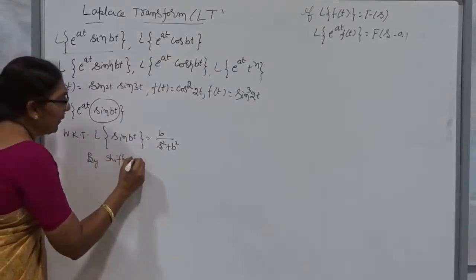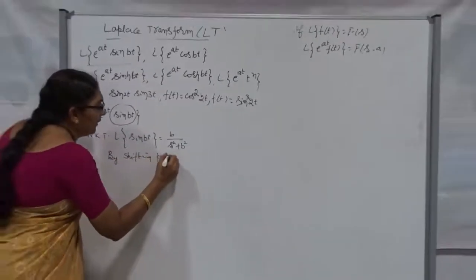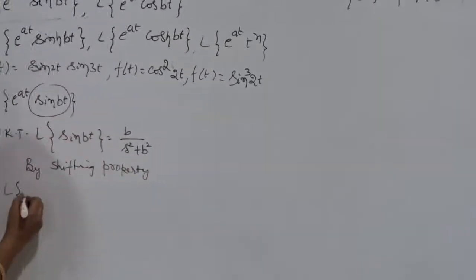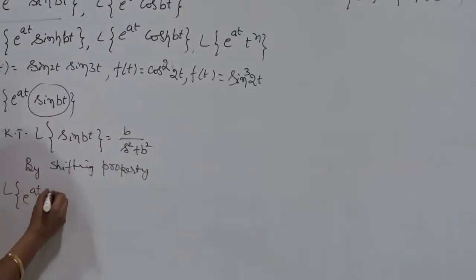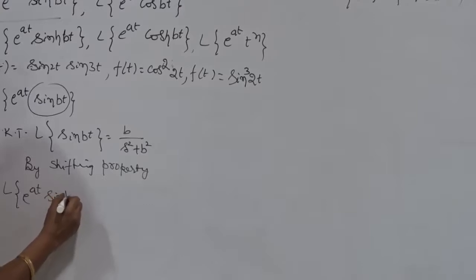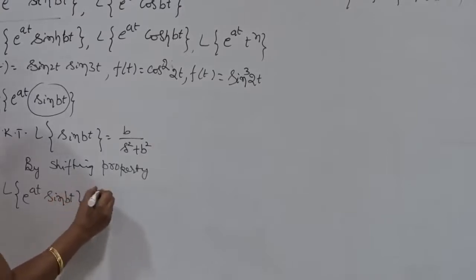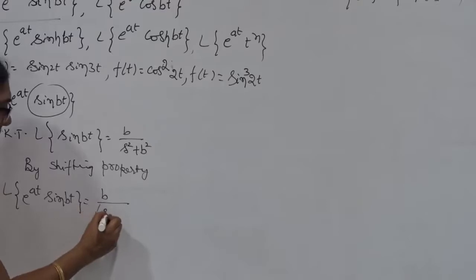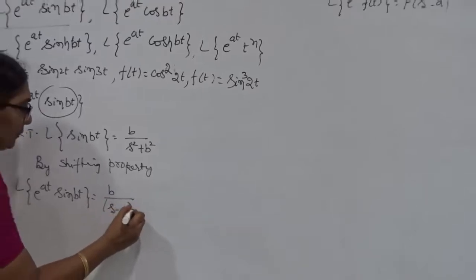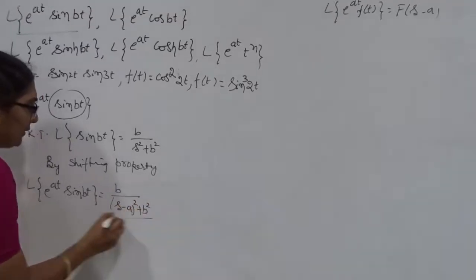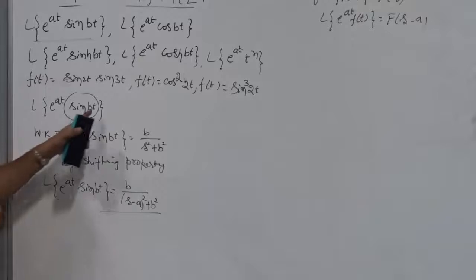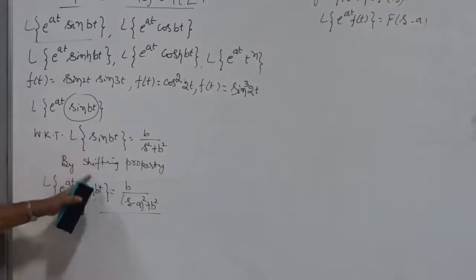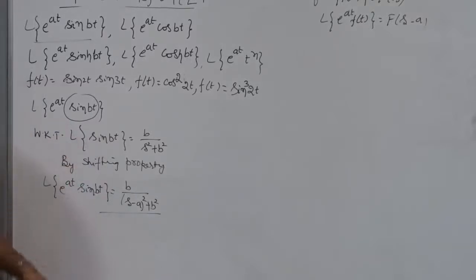By the Shifting Property, we get the Laplace Transform of e to the power Kt into sin Bt is nothing but B divided by (s minus A) squared plus B squared. Instead of finding it directly, by taking the Shifting Property we get the result very easily — that is why we have properties. Not only Laplace, but in Fourier Transform, Z-Transform, everywhere they have properties. This is the beauty of the properties of the corresponding transforms.